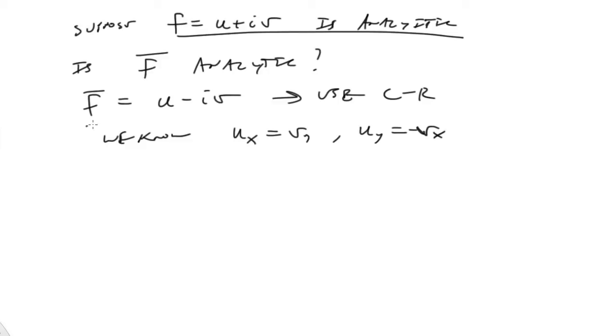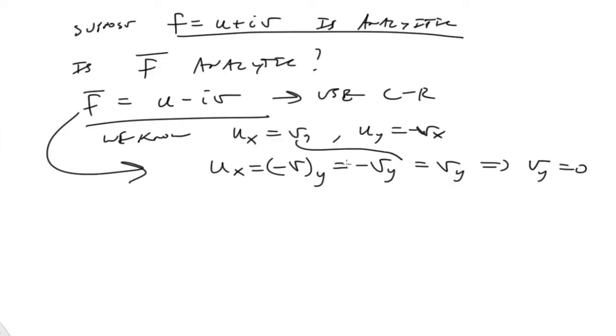All right, so now we have to go and do the same thing here. ux has to be equal to negative vy taking the partial derivative. So that becomes negative vy. We already knew that was also equal to vy, which implies then that vy has to be equal to zero. Because the only way for a number and itself, and it's negative to be equal, is if that number itself is zero.